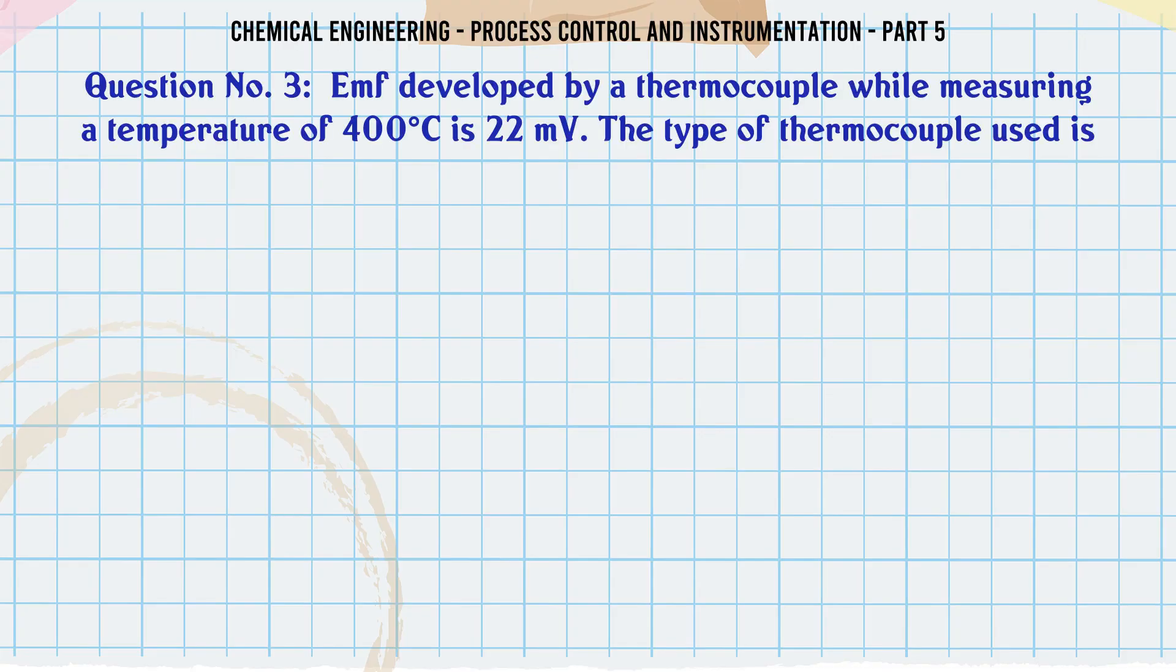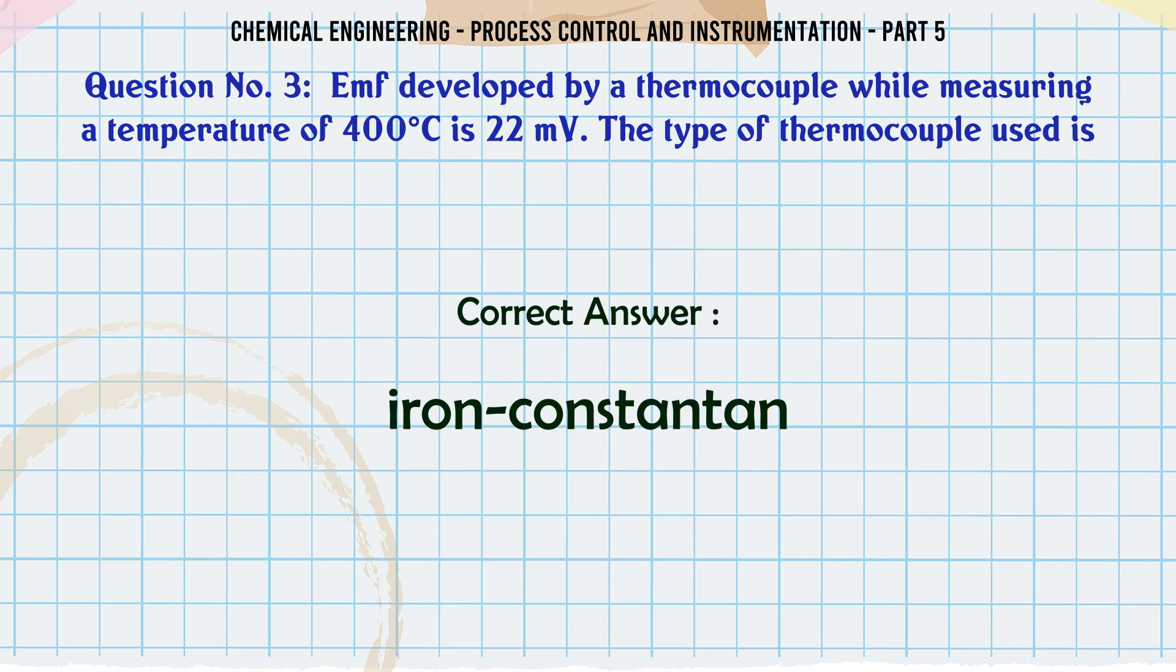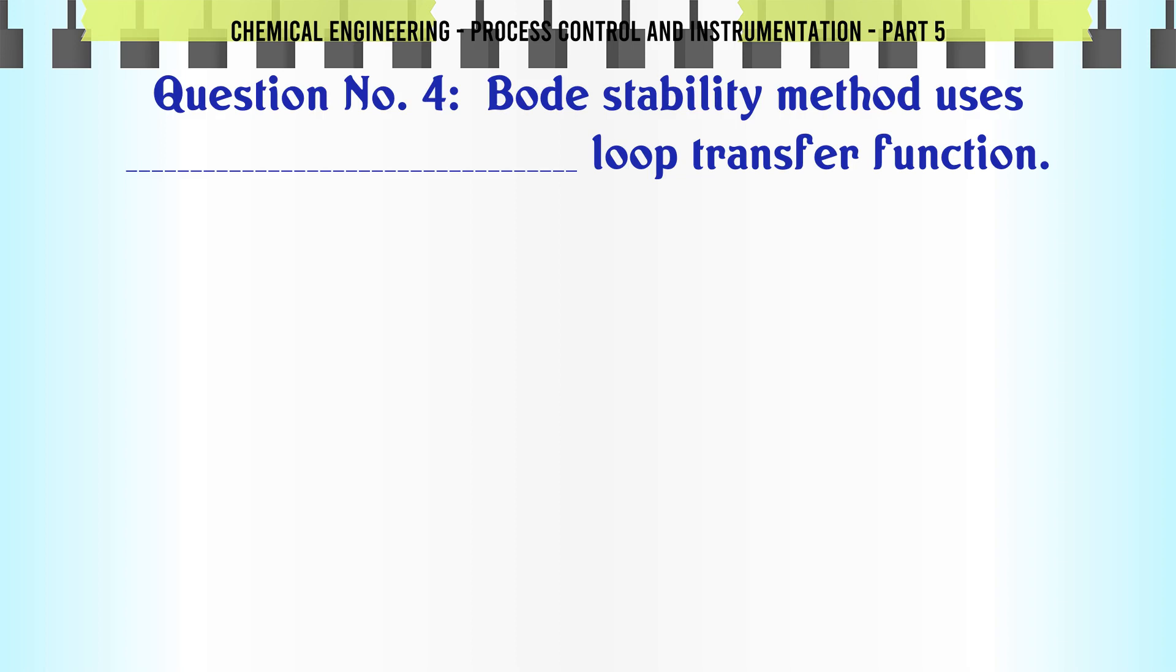EMF developed by a thermocouple while measuring a temperature of 400°C is 22 mV. The type of thermocouple used is: A. Chromel alumel. B. Iron constantan. C. Platinum rhodium. D. Platinum platinum rhodium. The correct answer is Iron constantan.